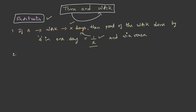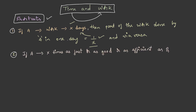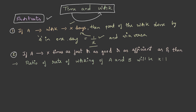The second shortcut: if A is x times as fast, or as good, or as efficient as B, then the ratio of rate of working of A and B will be x : 1, and the ratio of their time taken is 1 : x. So if A is x times as efficient as B, the rate of working ratio is x : 1, and the ratio of time taken is the reciprocal, which is 1 : x.